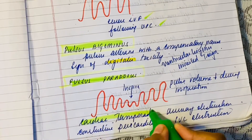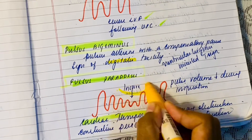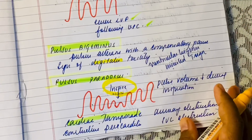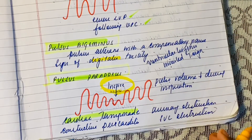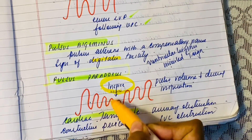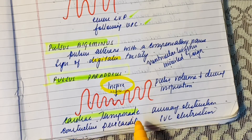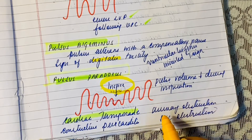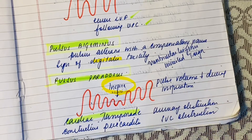Pulsus paradoxus is commonly seen in cardiac tamponade. When the patient inspires, there is a decrease in the pulse waveform — the pulse volume decreases during inspiration. It also occurs in constrictive pericarditis, airway obstruction, and SVC obstruction.